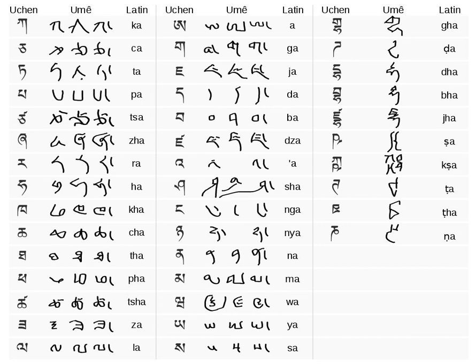Ume is a semi-formal form of the Tibetan alphabet. Other Tibetan scripts include the upright book form, Uchen (dbucan), and the everyday handwritten cursive, gyak yig.